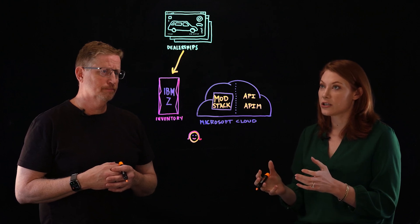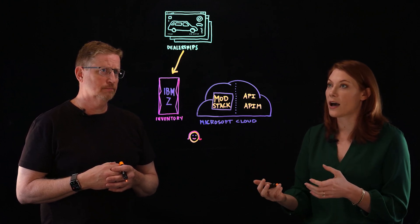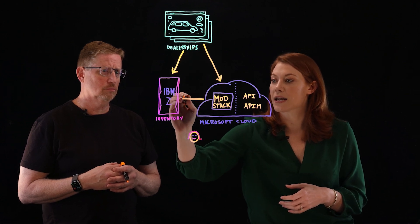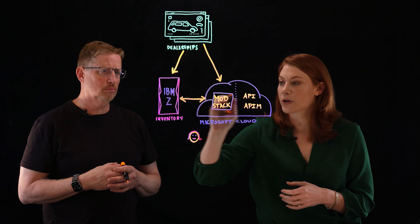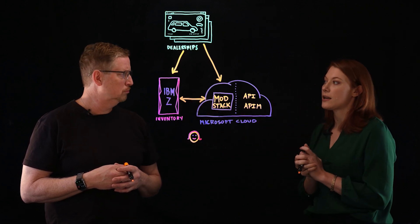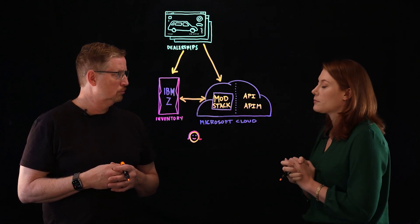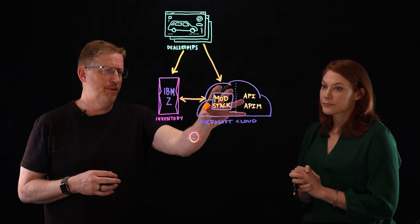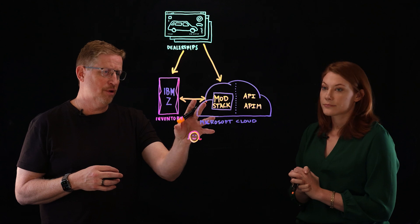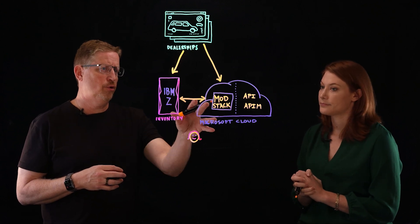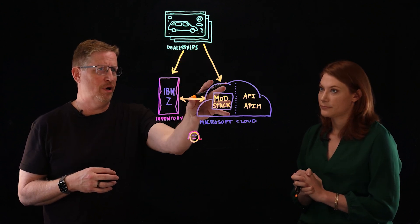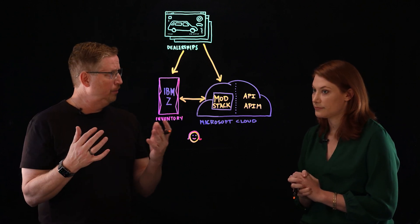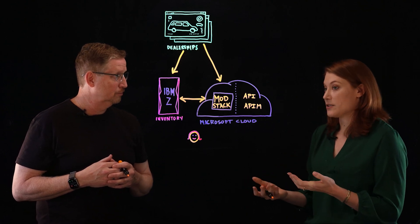So we're able to add agility by creating an API in Azure and directing that traffic to Azure, and this update happens as the inventory is replenished. So we're timing the update through the API and leveraging Azure API management. Okay, so now we have an API that's running in the Microsoft Cloud, and it's basically servicing all of the query traffic that's coming from those dealers without impacting the IBM Z. The IBM Z really gets to sit back and relax.